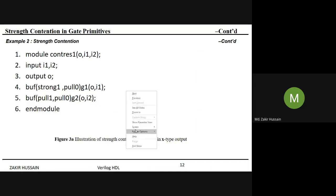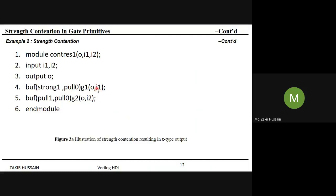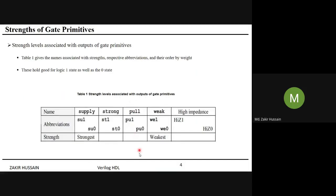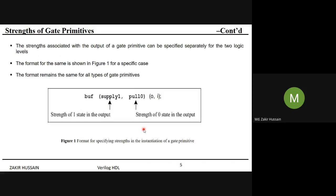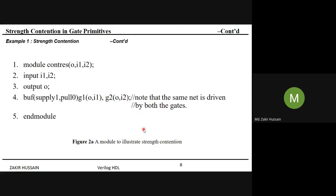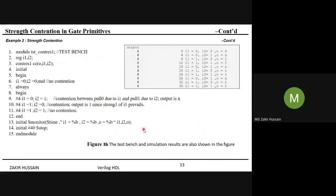Are there any doubts about what we covered in the last session? When contention occurs — say i1 is zero — full zero is acting on the net. If i2 is one, the strength level on gate g2 is full one. But full zero and full one are at the same strength level, acting in opposite directions, causing a contention issue. This contention issue can be resolved using wand logic.